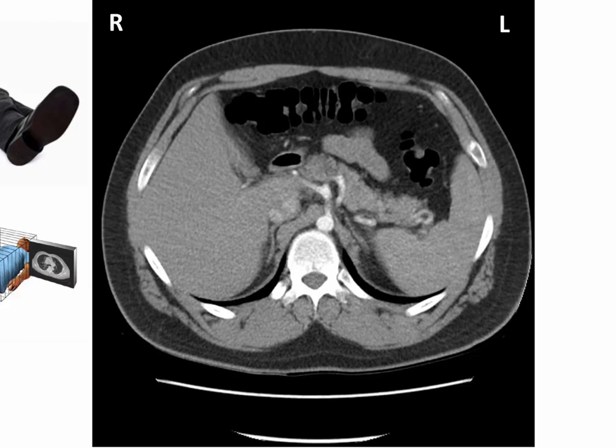We will read this CT starting from inferior and moving superiorly. The inferior limit of our thoracic cavity is the inferior thoracic aperture. Posteriorly, this is at the level of the T12 vertebrae, here. It is articulating with the head of the 12th rib, here, at the costo-vertebral joint.